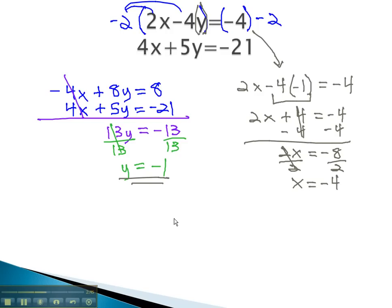Expressing our final answer as an x-y coordinate pair, x is negative 4, y is negative 1, to make this system of equations true.